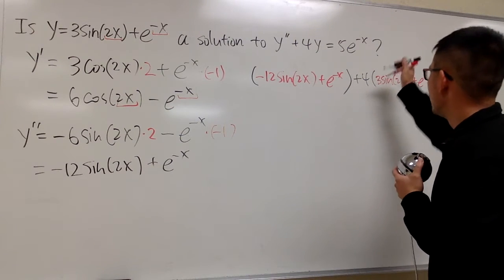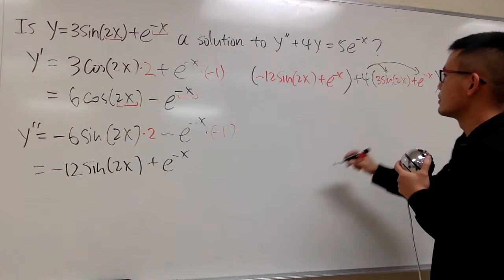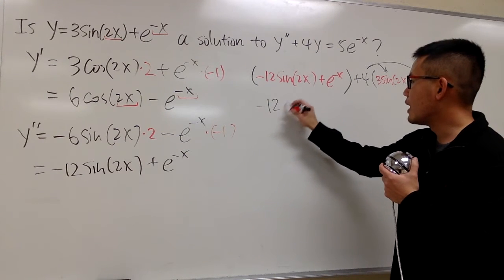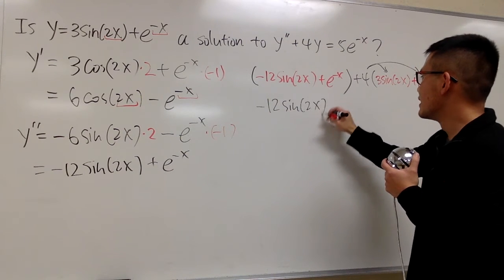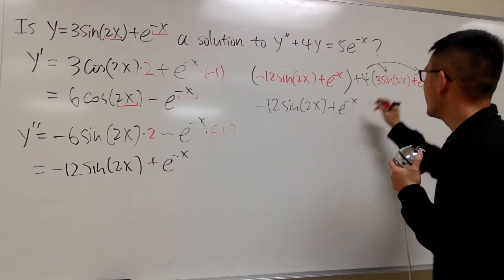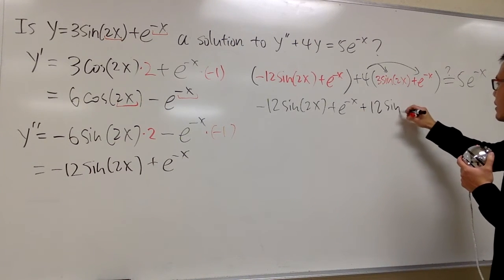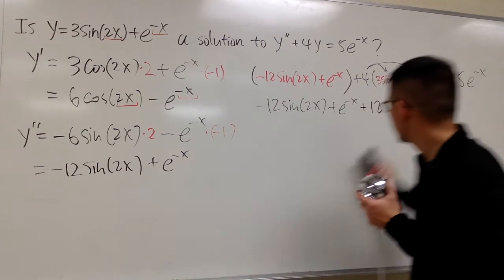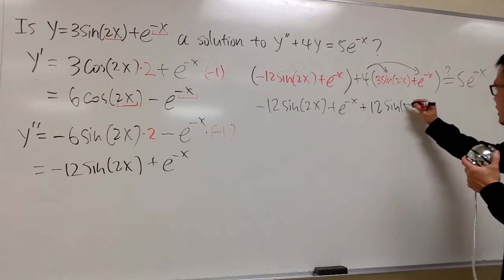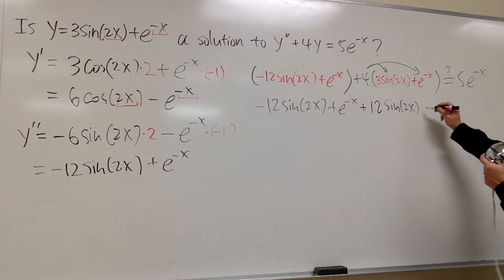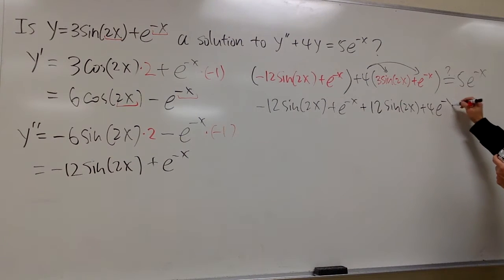Distribute this, distribute that. You guys know the usual deal. So this is negative 12 sine of 2x plus e to the negative x, this times that is plus 12 sine of 2x. This right here should be a 2x inside.